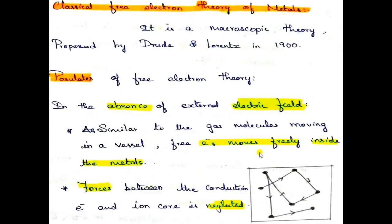We are going to start with the classical free electron theory. It is a macroscopic theory proposed by Drude and Lorentz in 1900. The postulates are divided into two cases. The first case is in the absence of an external electric field. The free electrons are considered as gas molecules present inside a vessel, which can easily move throughout the vessel — similarly, free electrons move freely inside the metal within its boundary.